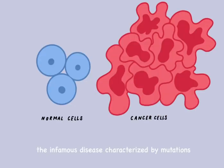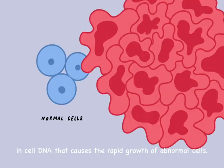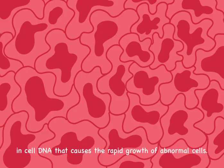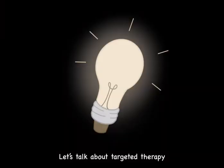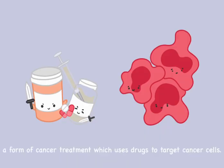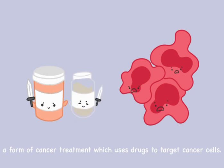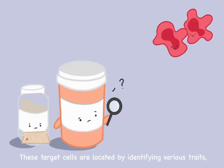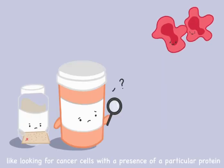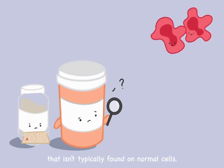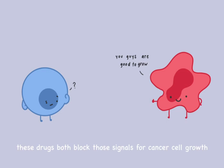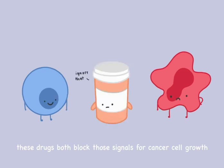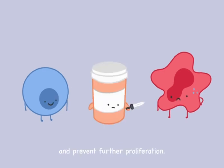Cancer, the infamous disease characterized by mutations in cell DNA that causes the rapid growth of abnormal cells. How can we fight it? Let's talk about targeted therapy, a form of cancer treatment which uses drugs to target cancer cells. These target cells are located by identifying various traits, like looking for cancer cells with the presence of a particular protein that isn't typically found on normal cells. Unlike traditional chemotherapy, these drugs both block those signals for cancer cell growth and prevent further proliferation.